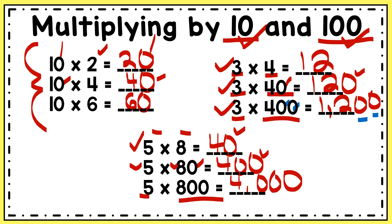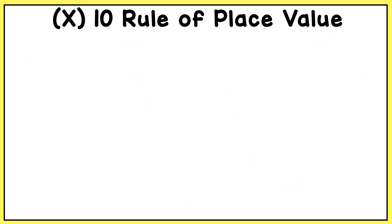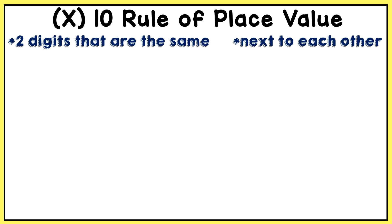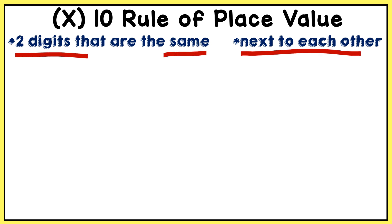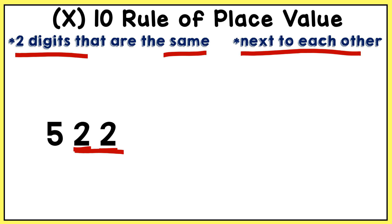Let's get into the times 10 rule of place value. You have to pay attention to two things: whenever you're looking at numbers to see if they follow the times 10 rule, you have to have two digits that are the same, and those two digits have to be next to each other. For example, take the number 522 — I have two digits that are the same, 2 and 2, and those two digits are next to each other.